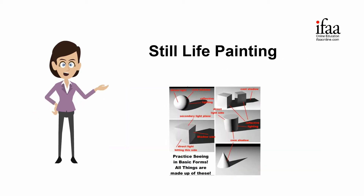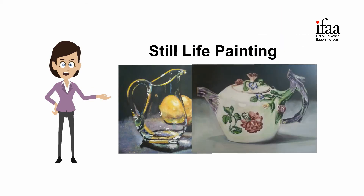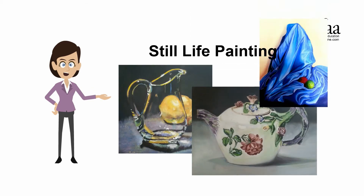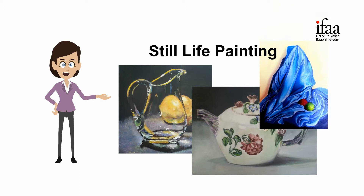In still life painting class, students learn to indicate simple form with a single light source and then learn to paint in oil colors. It consists of 10 topics. Introduction to various objects like glass, ceramic, drapery, etc., with composition is taught.